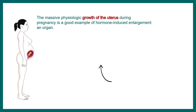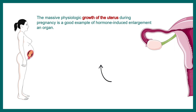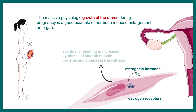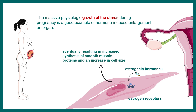The massive growth of the uterus during pregnancy is a good example of hormone-induced enlargement. In this case, estrogen receptors present in the uterus receive many signals that lead to an increase in the overall size of uterine cells — they become bigger.